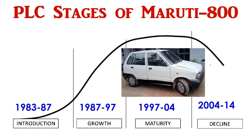Now let's discuss the concept of product lifecycle by studying the example of Maruti 800. Maruti 800 was introduced into the Indian market in 1983 as the cheapest car at that time, but it took almost three years to clear the waiting list. After 1987, large-scale production was carried out to meet consumer expectations. Profits increased and there was no threat of competition till 1997, after which Maruti 800 captured the maximum share in the Indian four-wheeler market.